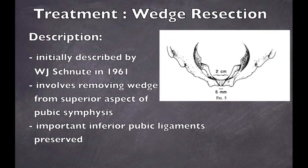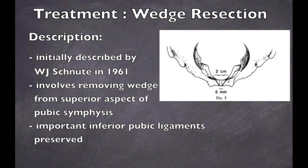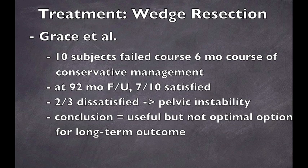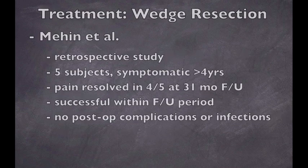The first surgical treatment we are going to consider is the wedge resection. This procedure was initially described by Dr. Schnoot in 1961. It involves removal of the superior portion of the pubic symphysis while preserving the important inferior arcuate pubic ligaments, thereby theoretically preventing instability. Looking at some evidence: a study done by James Grace and colleagues involved 10 patients who failed a 6-month course of conservative treatment. At an average of 92 months following surgery, 7 out of 10 patients were satisfied. However, out of the 3 unsatisfied patients, 2 had some degree of posterior pelvic instability. The authors concluded it is a useful treatment but not the most optimal approach when considering long-term outcomes.